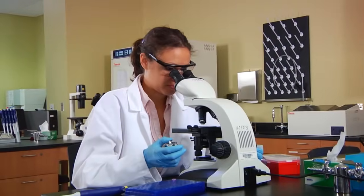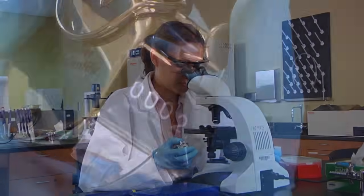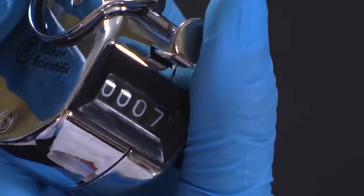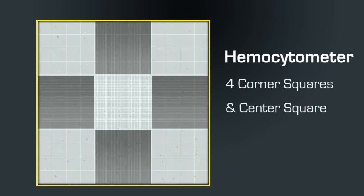The rules for counting cells sometimes differ from lab to lab. In our lab we count cells in the four large corner squares and the center square.